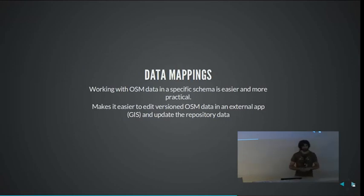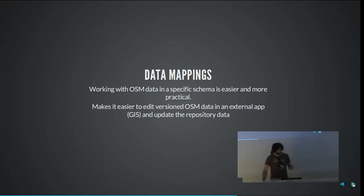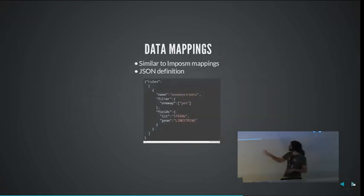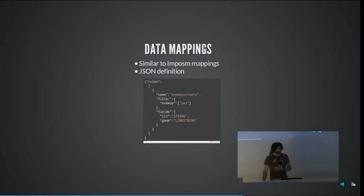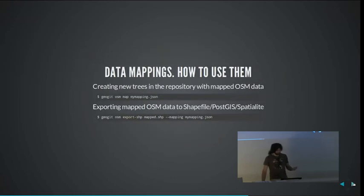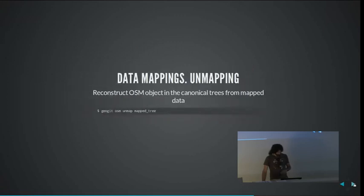The map command is what allows you to put your data into the repo in a different format, similar to Imposm. You define a mapping in a JSON file, and it takes your OpenStreetMap data and puts it into a different tree with a different structure, so it's easier for you to use. Then you can export that to a shapefile, edit the shapefile, put it back and unmap it.